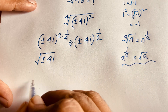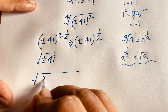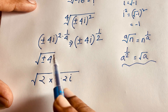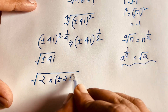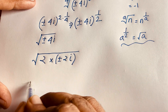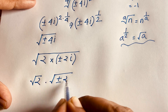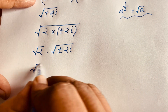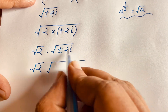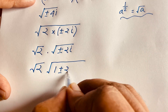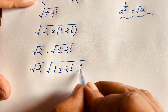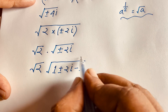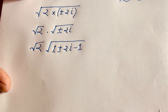So √(±4i) = √(2 × (±2i)). I can separate this as √2 × √(±2i). Now I add and subtract 1 inside: √2 × √(±2i + 1 - 1), keeping the expression equal to √2 × √(±2i).